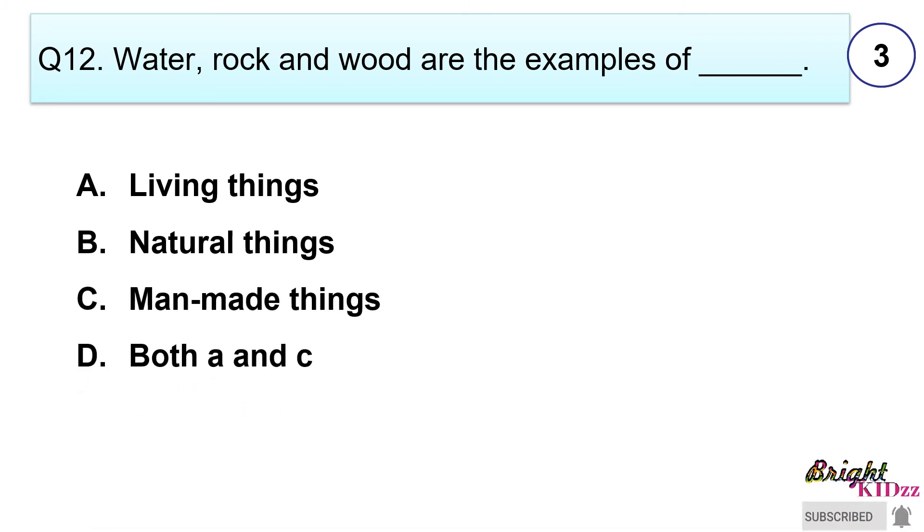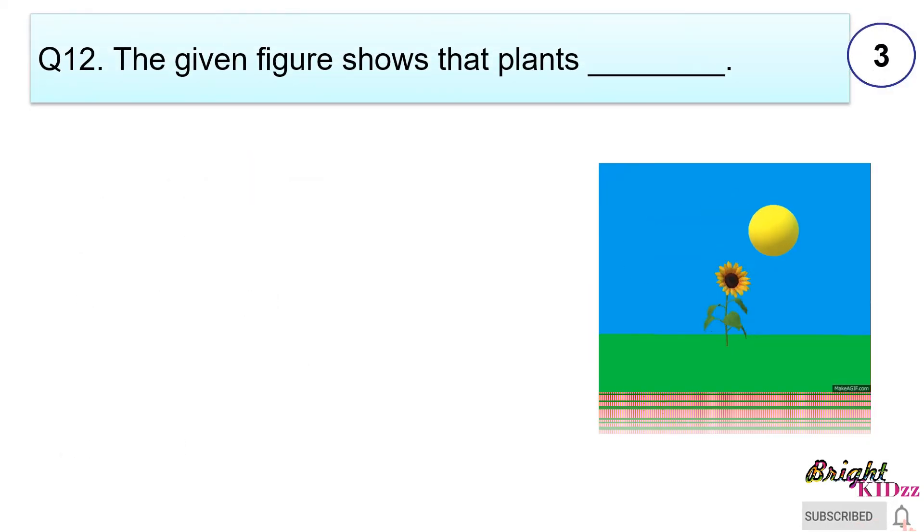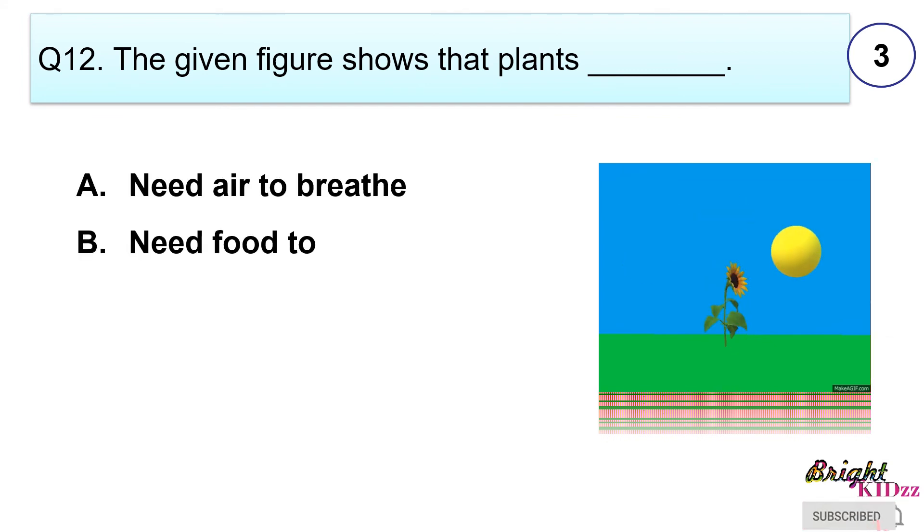Answer B. These are natural non-living things. The given figure shows that plants: A. Need air to breathe, B. Need food to grow, C. Produce young ones, D. Feel changes around them.